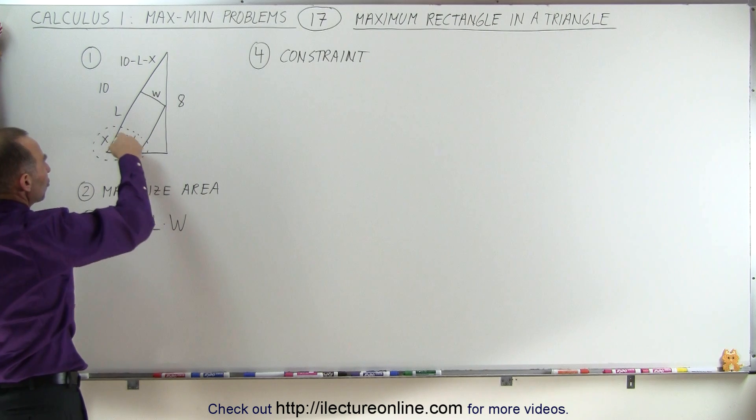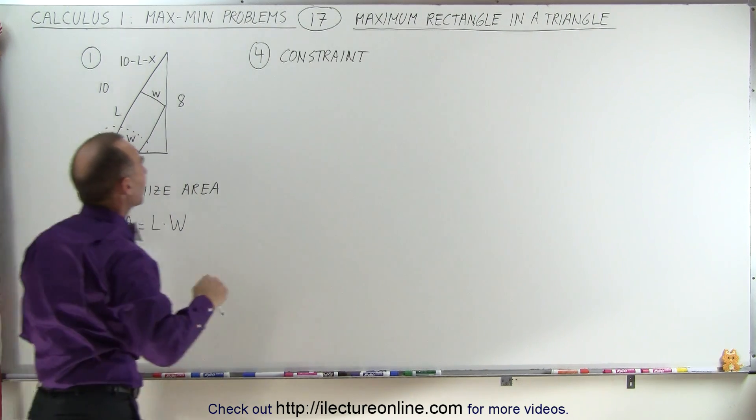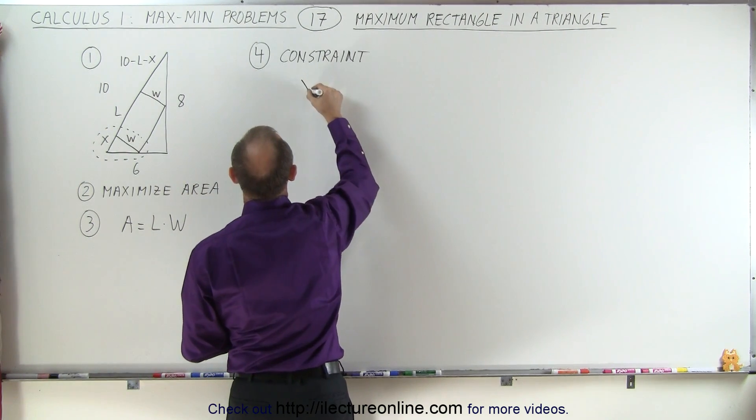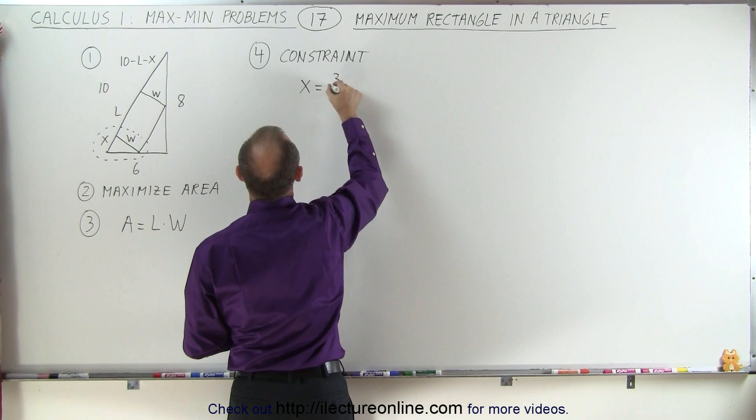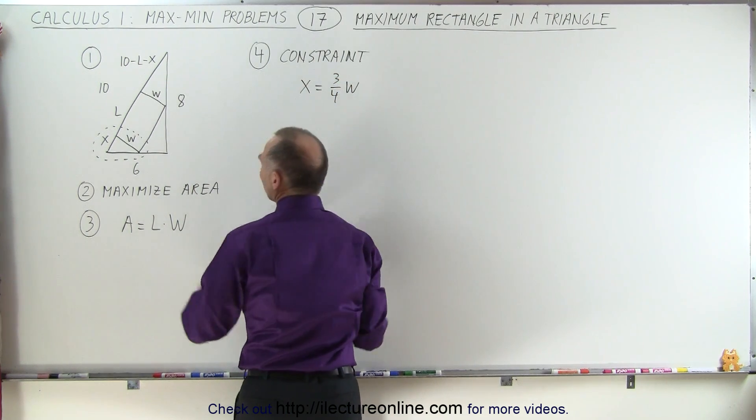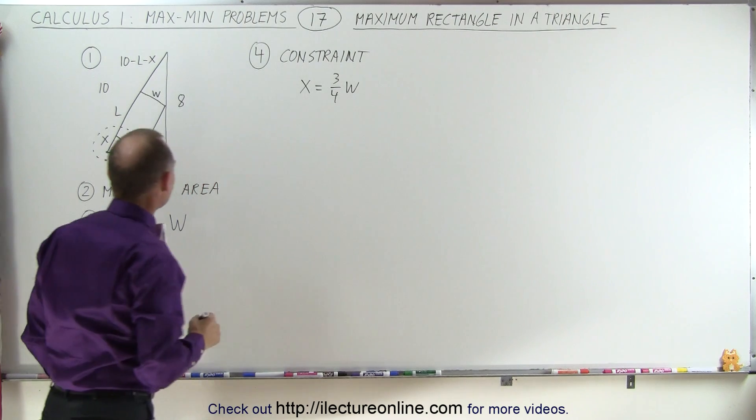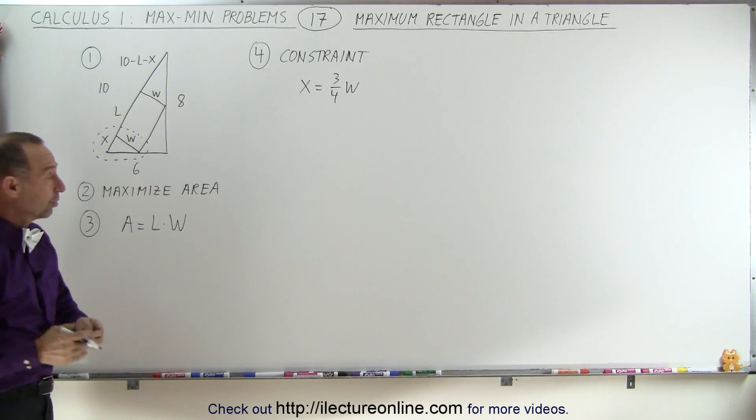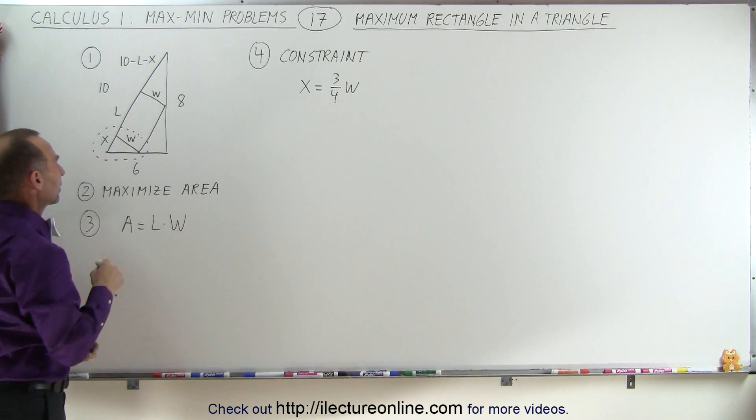Which means the relationship here between X and W can be expressed as X is going to be equal to 3 quarters W, because this has to be a 3, 4, 5 triangle as well. At least, the ratio, same as the ratio of the big triangle.